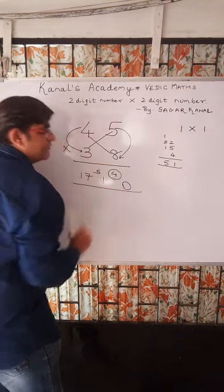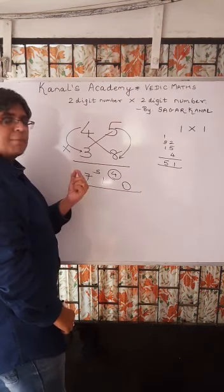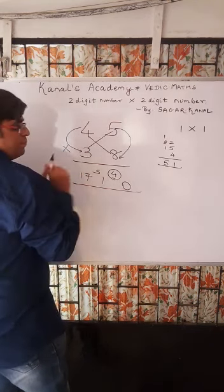Last step. 4 times 3 is 12. 12 plus 5 is 17. Answer is 1710. One step answer.